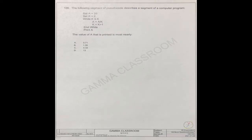Set a equals 26, set k equals 2, while k less than or equal to 4, a equals a divided by k, k equals k plus 1, end while, print a.